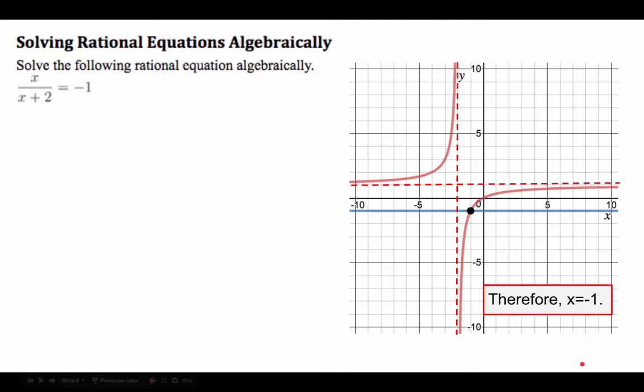Moving on to the same exact question, let's do it algebraically. Expressing the right hand side as negative 1 over 1 gives us a fraction equal to a fraction. We call that proportions. We could cross multiply, and when we simplify all that, x turns out to be negative 1. So the algebraic and geometric approach gave us the same answer.